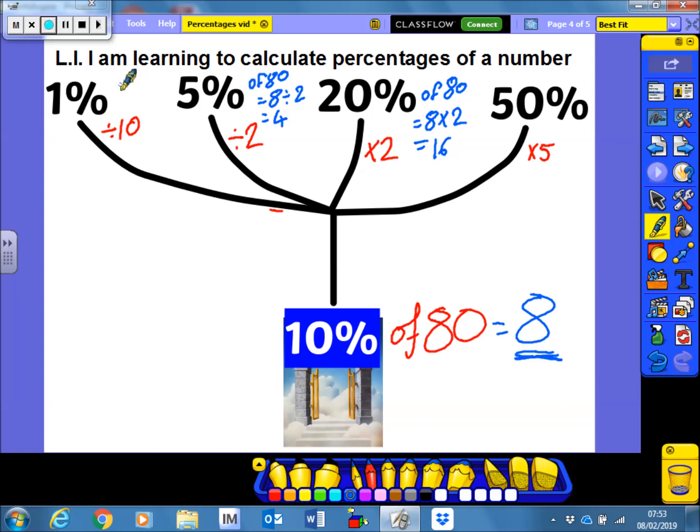What about 1% then? So 1% of 80 is going to be my 8 from the 10%. But what do I do to get 1%? I divide it by 10. So it's going to be 8 divided by 10, which gives me the answer 0.8. So a really easy skill. If I have 10%, I can work out pretty much any other percentage.